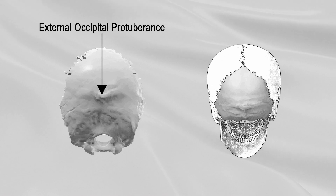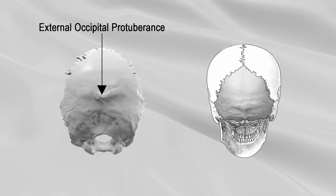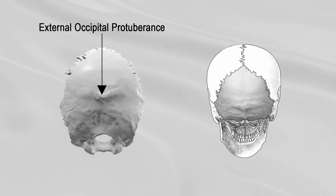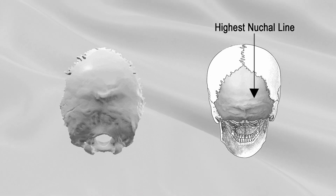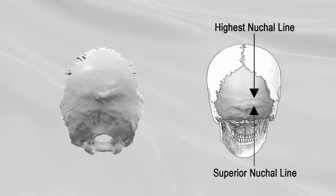The external surface of the squama is convex. It presents the external occipital protuberance, which is a prominence lying midway between the superior angle of the bone and the foramen magnum. Extending laterally from this prominence on either side are two curved lines, one a little above the other. The upper one is named the highest nuchal line, and the lower one is termed the superior nuchal line.